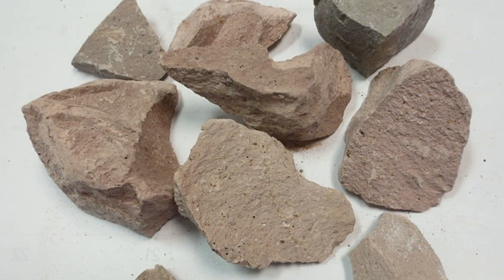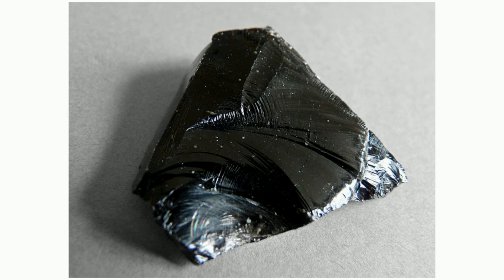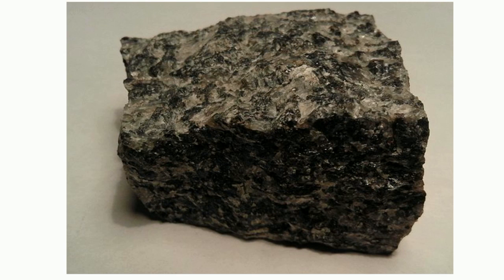Extrusive rocks have a very fine texture. Some, like obsidian, may even be smooth. Intrusive rocks have a coarse texture, which can be described as rough. Because intrusive rocks have larger crystals, this makes their texture rough.